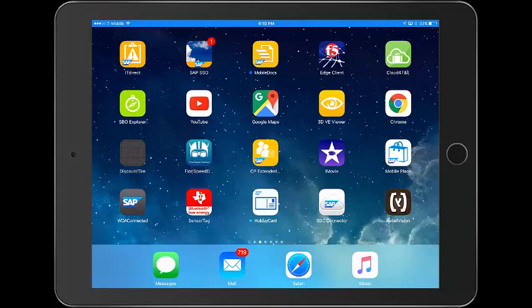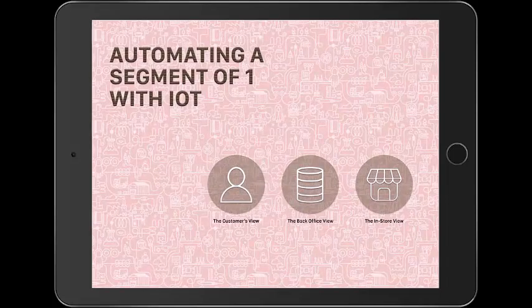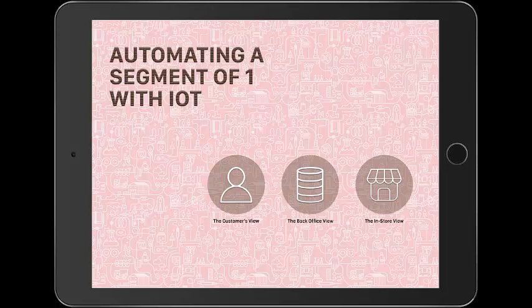Hello and welcome to the walkthrough of the IoT Golf Shoes demo. Let's begin by opening the application. This story has three parts to it: a customer view, a back-office view, and an in-store view. Each view has a different aspect of the story. We begin our story with the back-office view.